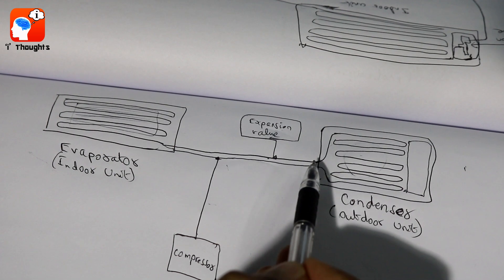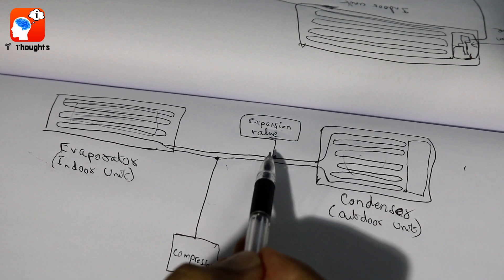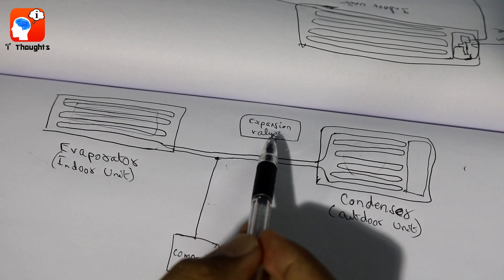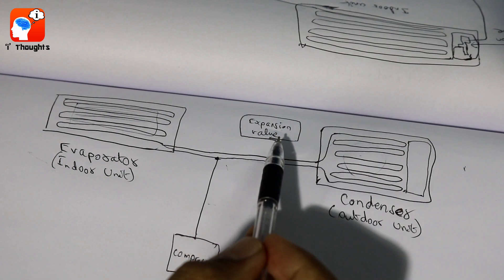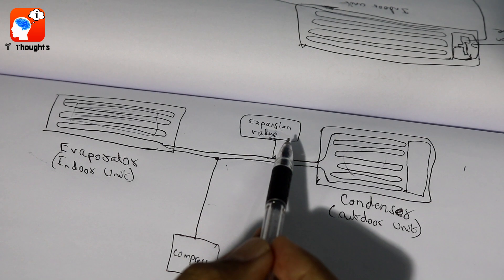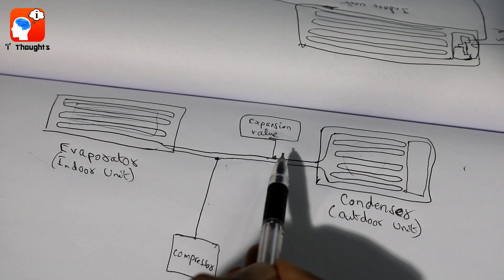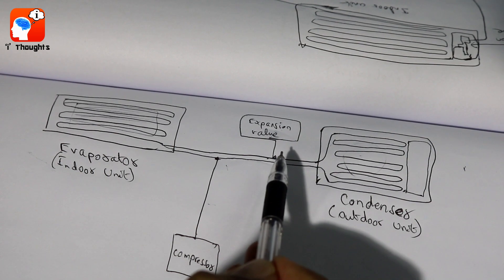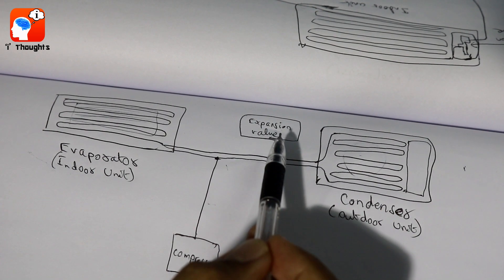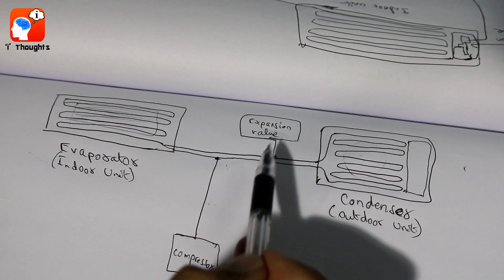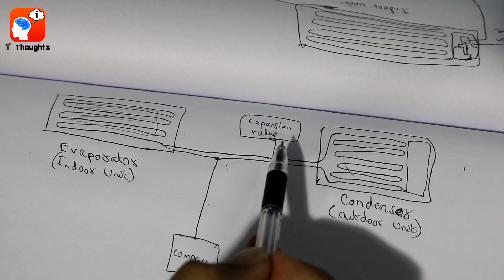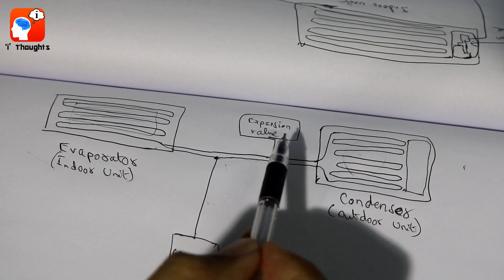It is an expansion valve. This is an expansion valve — this is how it is. The expansion valve reduces the coolant pressure. If you have a liquid in the car, it will reduce the pressure.